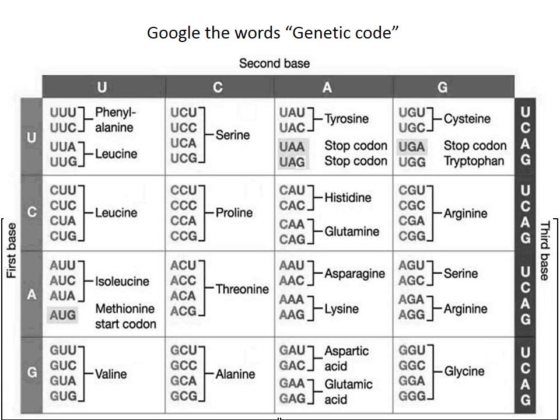A good idea is to Google the words 'genetic code.' You'll get a picture that looks like this genetic code chart — a chart of the 20 amino acids. You'll see proline PRO and methionine MET, both abbreviated a moment ago. This chart is going to be very useful when we go through the process of translation.